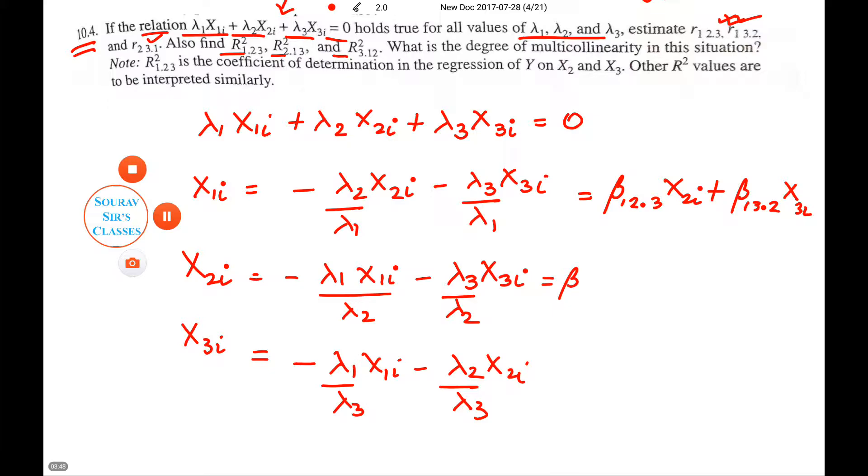What I am doing is that I am replacing -λ₂/λ₁ by β₁.₂, and I am replacing -λ₃/λ₁ by β₁.₃, holding 2 as constant—that means X₂ constant. So if I continue the same way, I will get something like this.